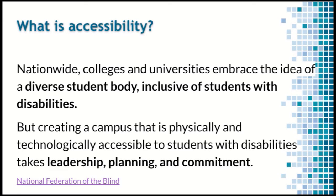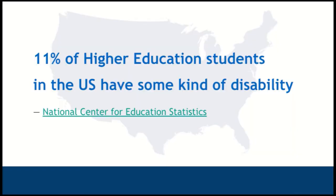So what is accessibility? Pretty much colleges and universities nationwide embrace the idea of a diverse student body — they want students to be accepted whether they have disabilities or not. However, creating a college campus that's physically and technologically accessible is quite a challenge. A statistic from the National Center for Education Statistics is that 11% of higher education students in the U.S. have some kind of disability.